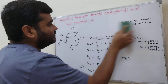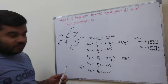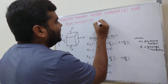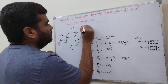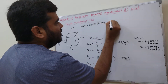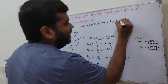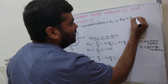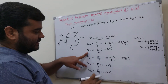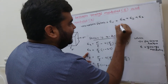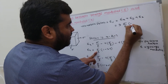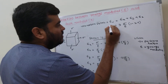Now, what is the volumetric strain? The total volumetric strain is the sum of strain in x, strain in y, and strain in z directions. Adding all three, which are equal, gives volumetric strain equal to 3 times sigma/E into (1 minus 2nu).